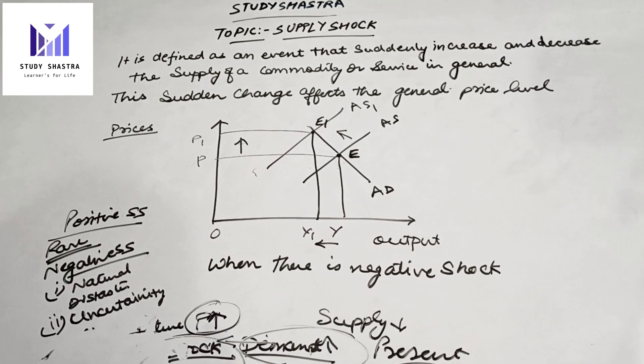This is about negative supply shock and its potential causes. Any increase in input cost can cause the aggregate supply curve to shift to the left.